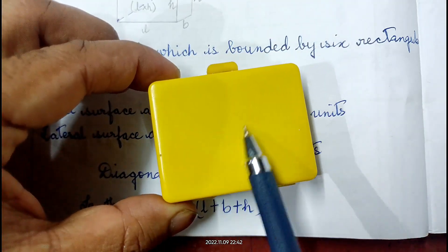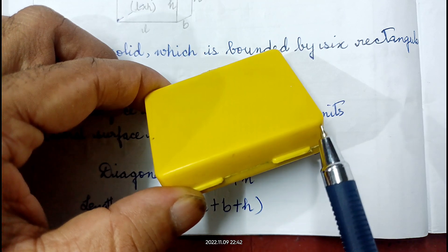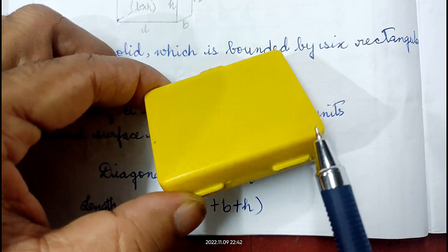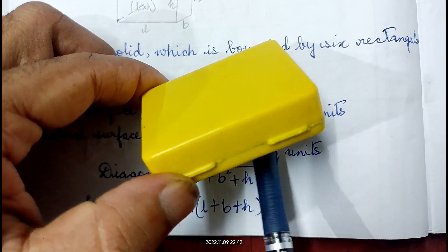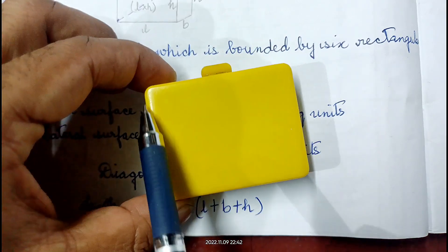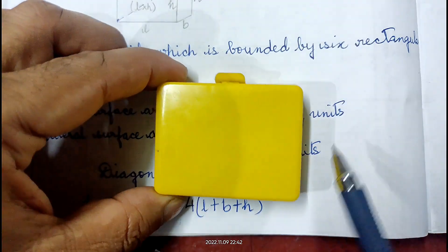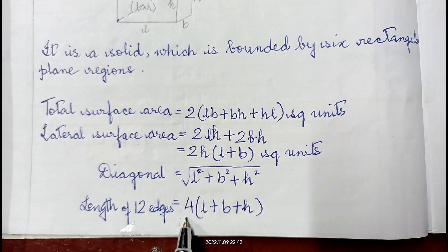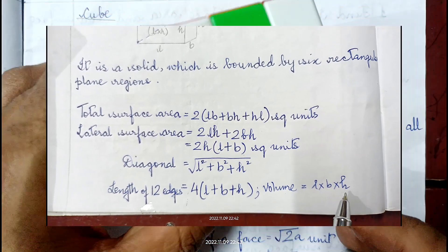In this box, the flat surfaces are called faces, the line segments are called edges, and the corners are called vertices. There are 4 edges each of length L, 4 of breadth B, and 4 of height H, giving 12 edges total. Length of 12 edges = 4(L + B + H). Volume of the cuboid = length × breadth × height. This is a Rubik's cube, where length, breadth and height are all equal — such structures are called cubes.